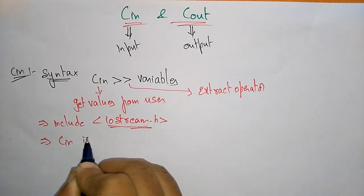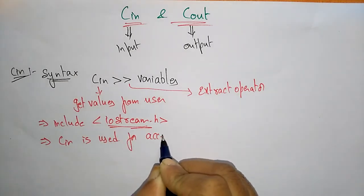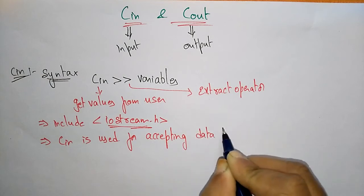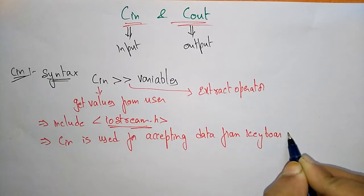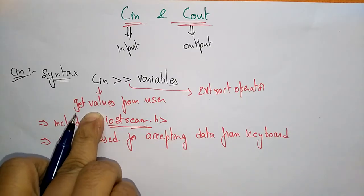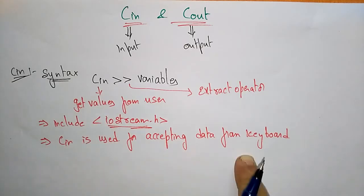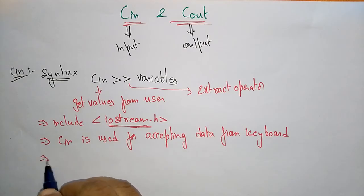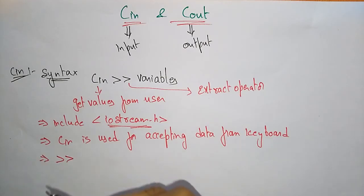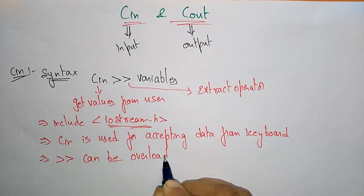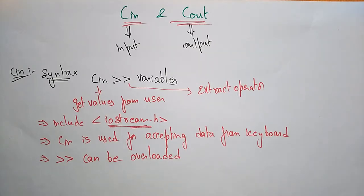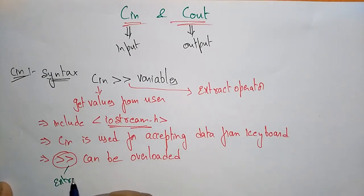cin is used for accepting data from the keyboard. It is called the extraction operator or 'get from' operator. This extractor operator can be overloaded. C++ supports operator overloading, and this operator is used as the extractor operator as well as the bitwise right-shift operator.